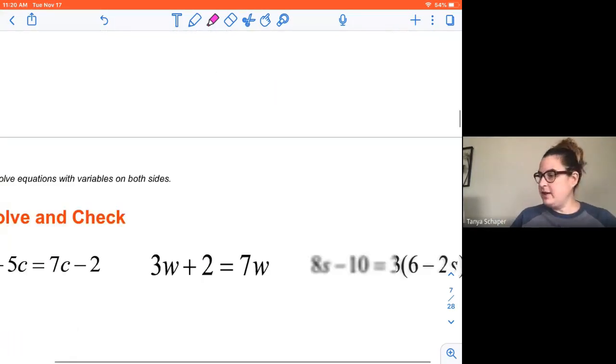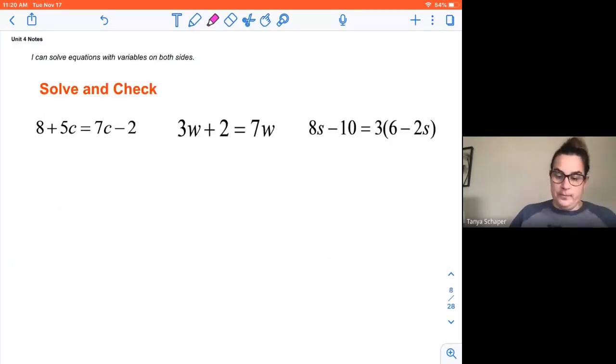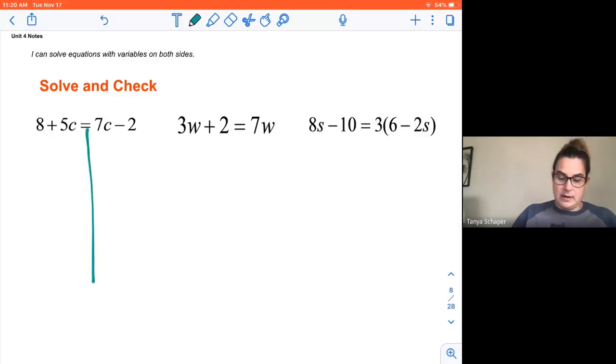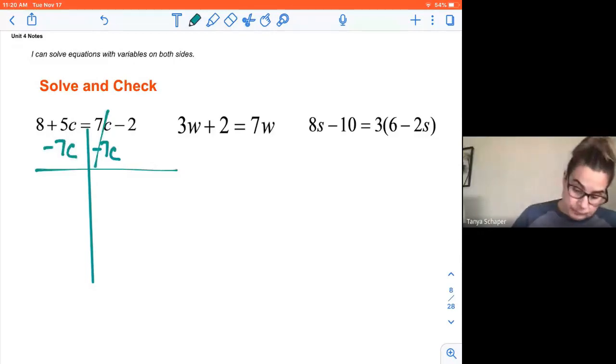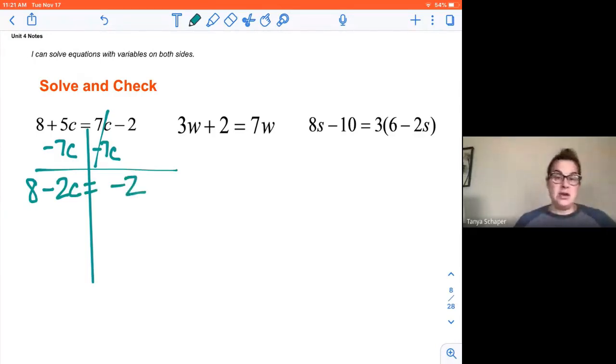I'm going to go through three problems with you and then give you some time to work. So when we look at this first equation, I've got 8 plus 5c equals 7c minus 2. Both sides are already simplified. I can't combine any other terms. So now what I need to decide is which side I want my variables on. And honestly, it doesn't matter. They can be on the left. They can be on the right. It's your call. So I'm looking at this and I'm going to be like, hey, let's put them on the left. That means I need to cancel 7c from both sides. 7c minus 7c is zero. 5c minus 7c is minus 2c. So 8 minus 2c equals negative 2.